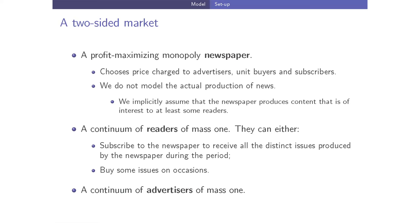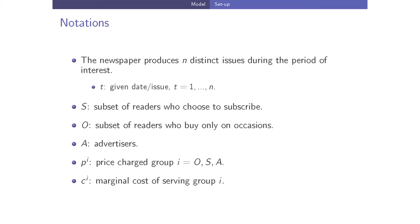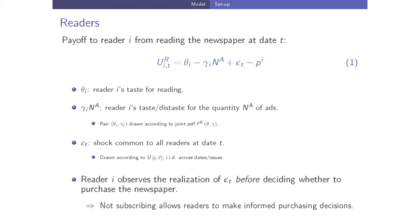We do not model the actual production of news — we assume the newspaper produces something of interest to readers. We have a continuum of readers of mass one who can either subscribe or buy occasionally at the newsstand, and a continuum of advertisers of mass one. Notation: the newspaper produces N distinct issues; S denotes subscribers, O occasional buyers, A advertisers. Prices are p_O, p_S, p_A, and c_i is the marginal cost of serving group i.